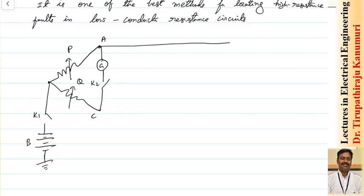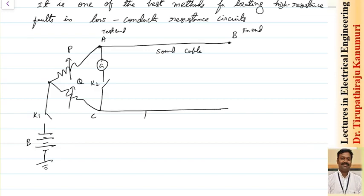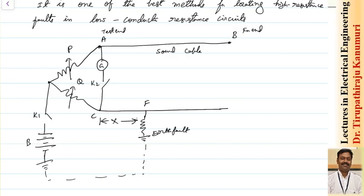There should be a healthy conductor — the sound cable, meaning a cable without any type of fault. This is the far end of the cable, and this is the test end of the cable. Now there is a faulty cable, and let us assume this faulty cable has a fault at location F with some fault resistance. This is the earth fault — the fault is connected to earth. We are first discussing how to diagnose the earth fault. Let us assume this earth fault happened at a distance x from this end, and I am connecting the far ends using a small conductor having zero resistance.